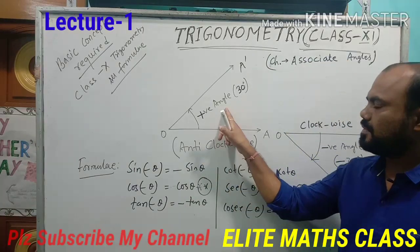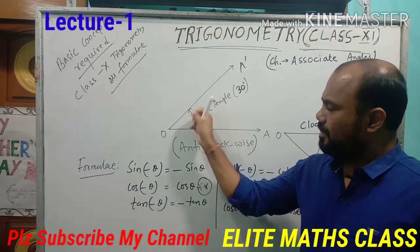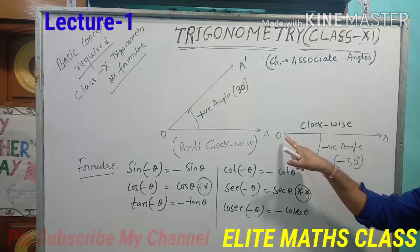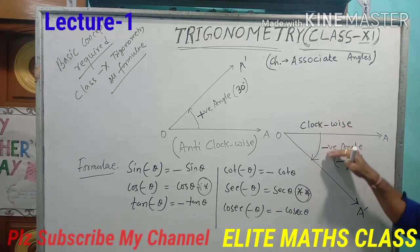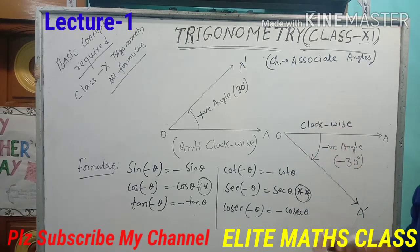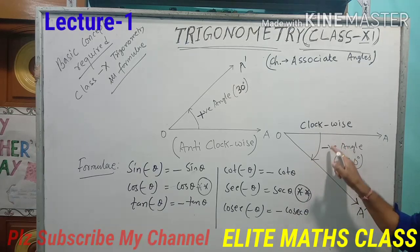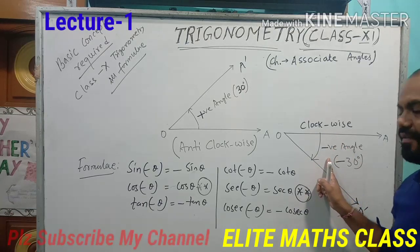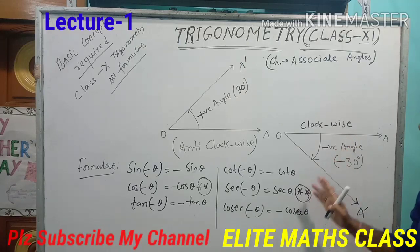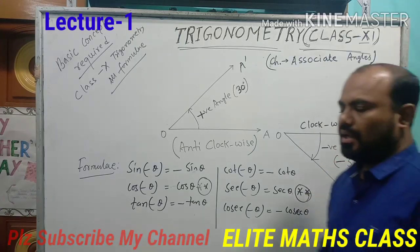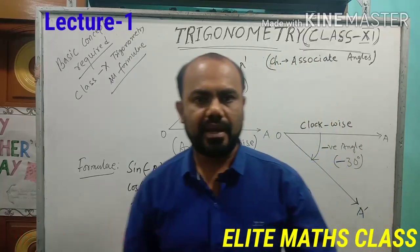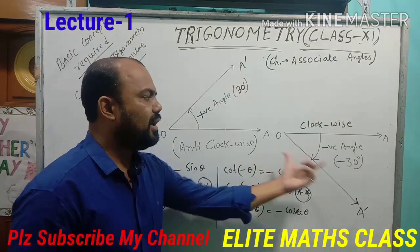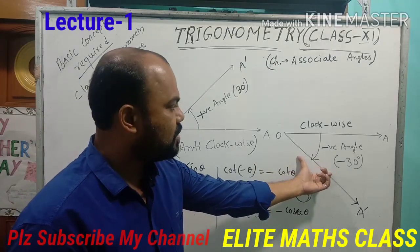See here, I have written 'positive angle'. Say the measure of the angle is 30 degrees, so it will be plus 30 degrees. Now see this figure. In this figure, the angle is created by clockwise rotation of the initial line. Then the angle is taken as a negative angle. If it measures 30 degrees, then it will be written as minus 30 degrees. So there are two types of angles — that concept was not in class 10. Positive angle as well as negative angle are both there.